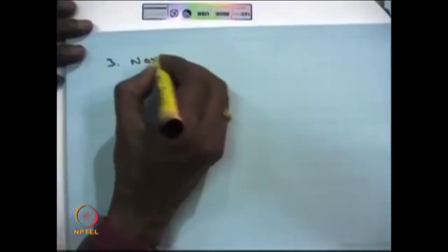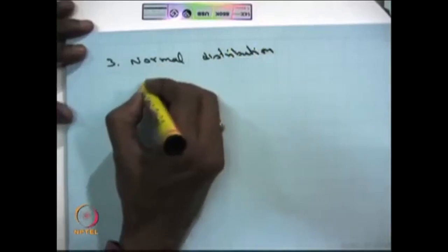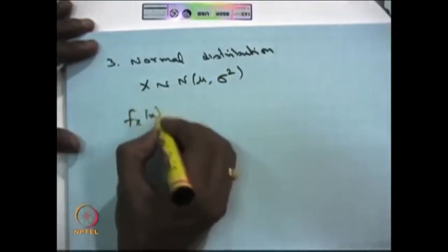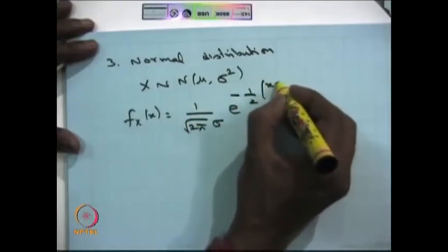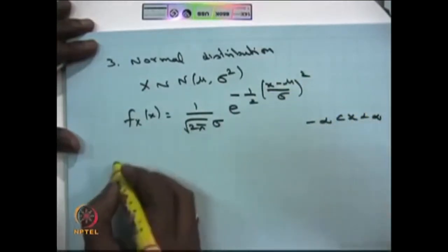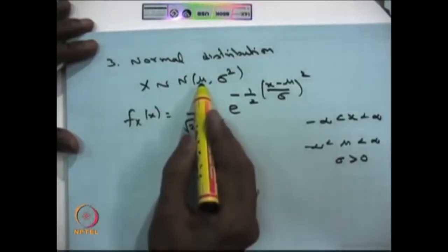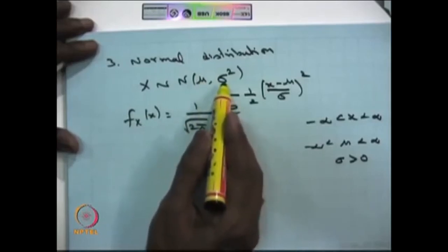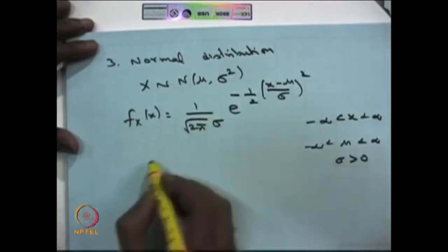The third continuous distribution is the normal distribution or Gaussian distribution. When we say the random variable is normally distributed with parameters mu and sigma squared, the probability density function is (1 / (sqrt(2*pi) * sigma)) * e^(-1/2 * ((x - mu)/sigma)^2), where x can lie between minus infinity to infinity, mu also lies between minus infinity to infinity, and sigma is strictly positive. Here mu is the mean and sigma squared is the variance of the normal distribution.